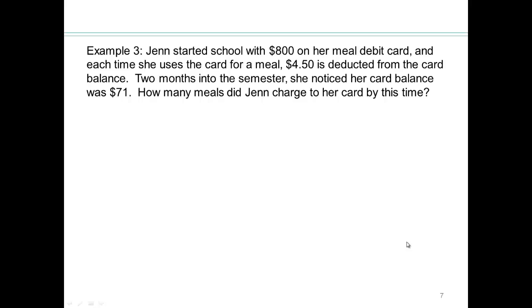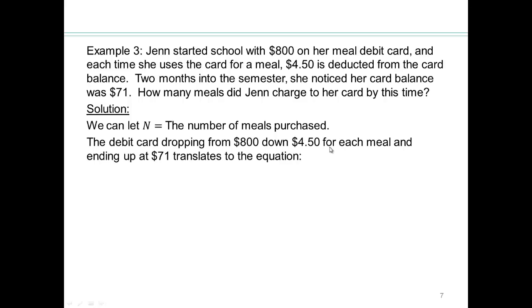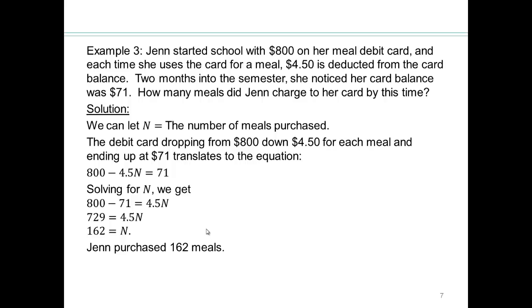Why don't you pause the video here and see what you can do. How many meals? So let's take that as our variable. Let's say n is the number of meals that Jen purchased. So since the debit card is dropping from 800 down 450 for each meal, and we have n meals, we're going to have 800 minus 450 times n, and that is $71. That's the balance on the card left. And then solve for n. You know how to do that now. Go ahead, pause the video and continue. So you should end up with 162 for n.